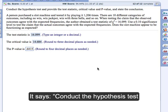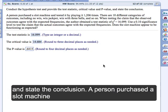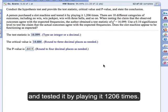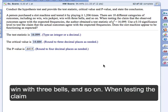Here it is. It says, conduct the hypothesis test and provide the test statistic, the critical value, and p-value, and state the conclusion. A person purchased a slot machine and tested it by playing it 1,206 times. There are 10 different categories of outcomes, including no win, win jackpot, win with three bells, and so on.